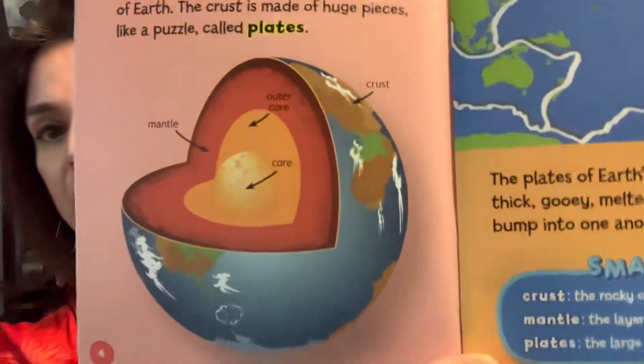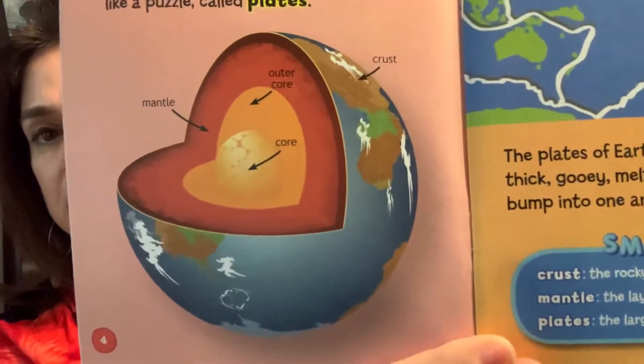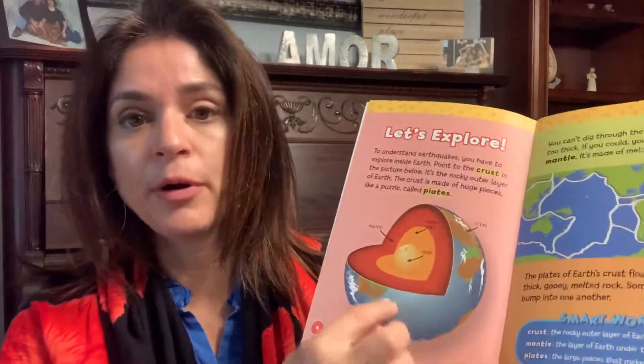To understand earthquakes, you have to explore inside the earth. Maybe you've had a piece of candy like a Gobstopper or a jawbreaker — we can use that idea to understand how the earth looks on the inside. Point to the crust in the earth below — it's that rocky outer part.